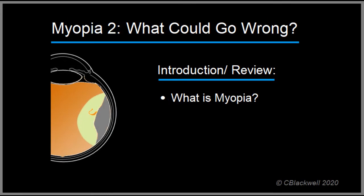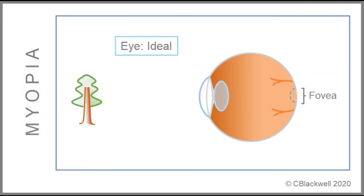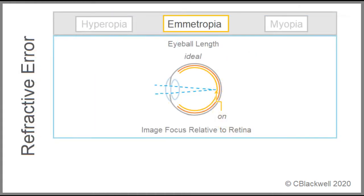We begin with a brief review of what myopia is. If you have watched video one, you can skip ahead to the next section on structure and pathology. In the sense that your eye works like a camera, if you had ideal vision, light rays from a distant object would come to a focus and make a sharp image on the retina in the back of the eye. The cornea and lens in the front of the eye act together to supply the focusing power. To form a sharp image, the focus distance must match the length of the eye.